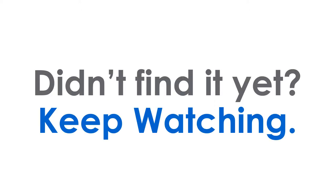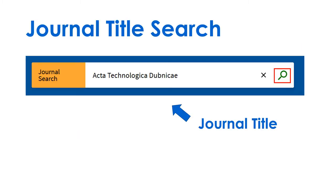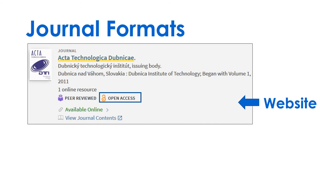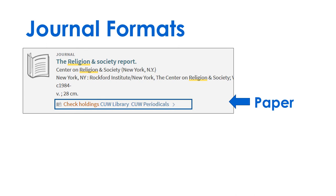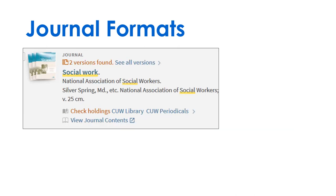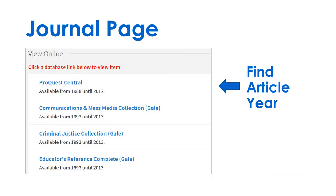If you still didn't find it, try searching by journal title. Electronic journals come from websites and databases. Some are in paper format. Always click to see all versions, and always start with the electronic options first. Click on the journal title, then check the database links for the year of the article.